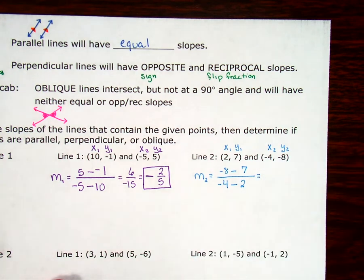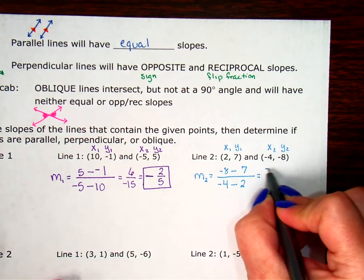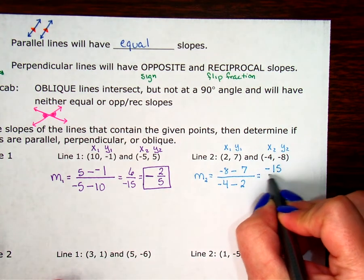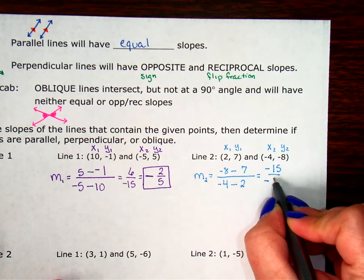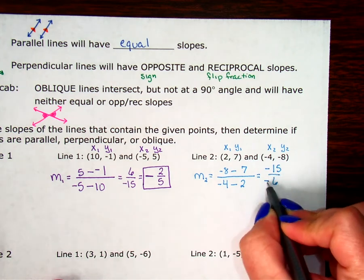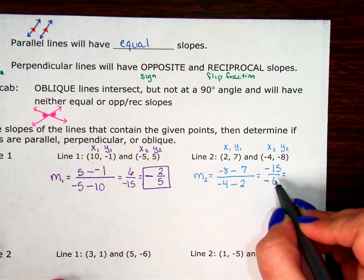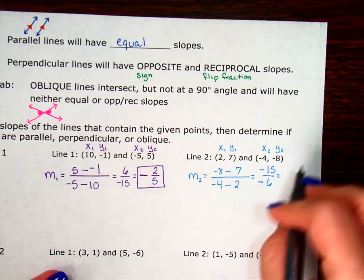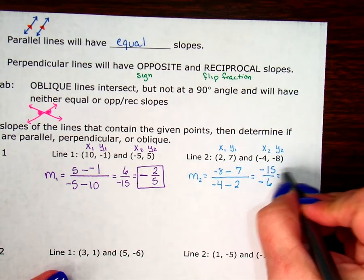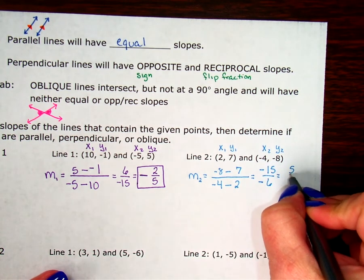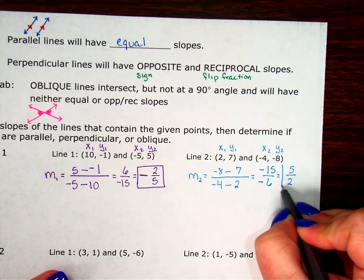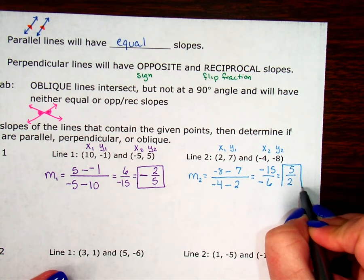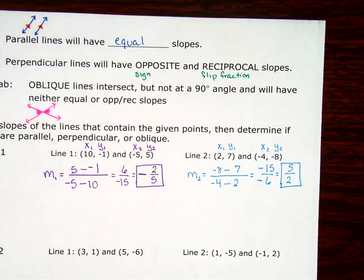Negative 8 minus 7 is negative 15. Negative 4 minus 2 is negative 6. Negative over negative cancels to a positive. 15 over 6, they're both divisible by 3. My 15 is going to be a 5. 6 divided by 3 is 2. So my slope here is 5 halves. Remember, we do not change it into a mixed number. We want to leave it where we can see the rise and we can see the run.